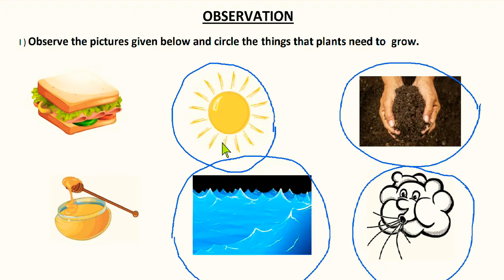Next: soil. Do plants need soil? Yes, plants need soil. Plants get nutrients and minerals from the soil, so plants need soil. Circle the soil.